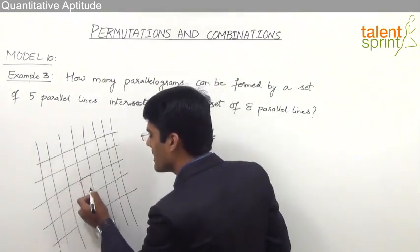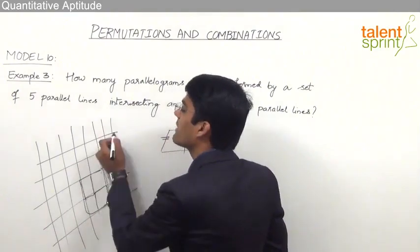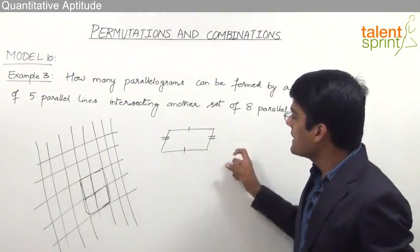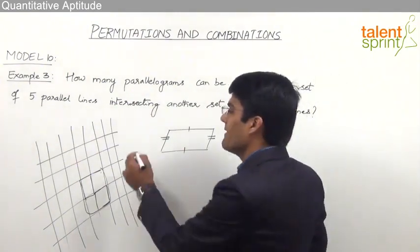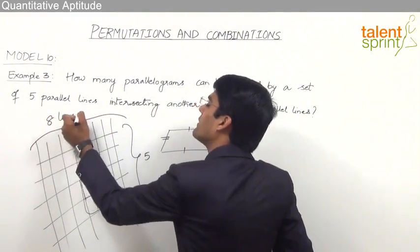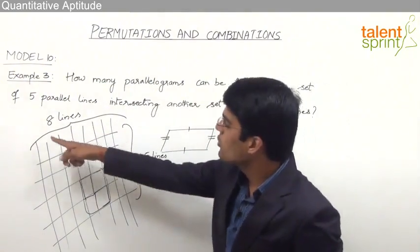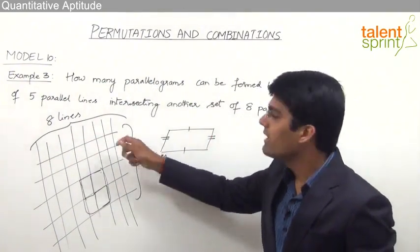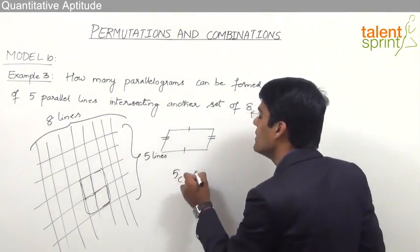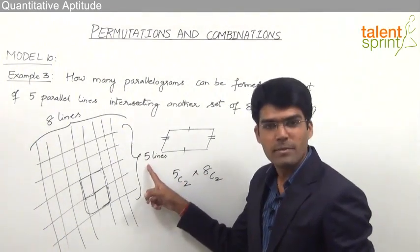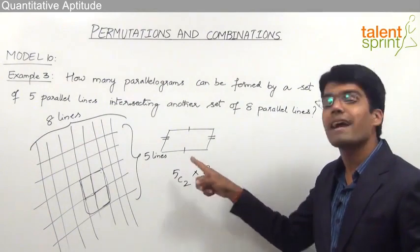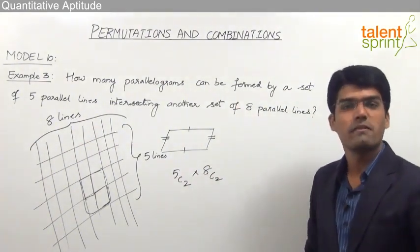To form a parallelogram, we need to select 2 lines out of the 5 parallel lines and 2 more lines out of the 8 parallel lines. Any such selection results in a parallelogram. So the number of parallelograms equals 5C2 × 8C2. We multiply by the principle of multiplication since both selections are done together.